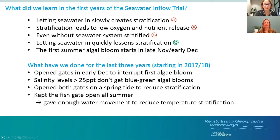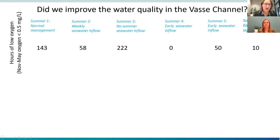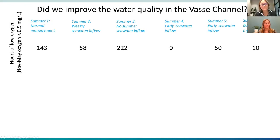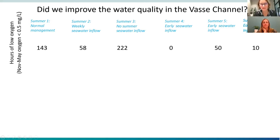We've done this early December seawater inflow for the last three years and I want to show how we've changed the water quality. Counting up the hours of low oxygen in the Vasse Channel across six summers: in summers one to three, we had up to 200 hours — many equivalent days — of almost no oxygen in the bottom waters. Then in summer four, where we first allowed seawater in early December, we got no times with low oxygen. In years five and six, we did have some low oxygen hours, but the last three years have vastly reduced the number of hours of low oxygen — we've improved the oxygen situation considerably.